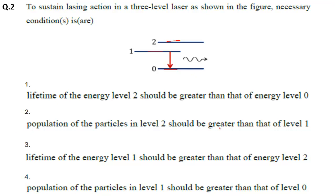Option 2: population of particles in level 2 should be greater than that of level 1. Option 3: lifetime of energy level 1 should be greater than that of level 2. Option 4: population of particles in level 1 should be greater than that of level 0. The correct options are 3 and 4.